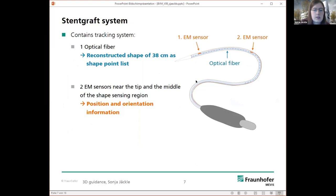And also we have integrated two EM sensors. One is at the tip and one at the middle. And this allows us to obtain the position and orientation information for both EM sensors. And since we placed both EM sensors at the front, it allows an accurate localization at the front part of the stent graft system.